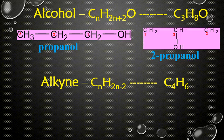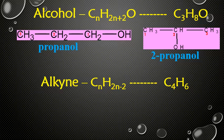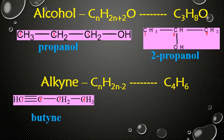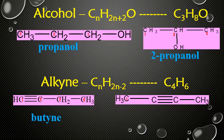Let's take another example. The common molecular formula of alkynes is CnH(2n-2). If we take the molecule C4H6, we can draw one structure where the triple bond is attached to the first and second carbon atoms — named 1-butyne. If we change the position of the triple bond to between the second and third carbon atoms, its name changes to 2-butyne.